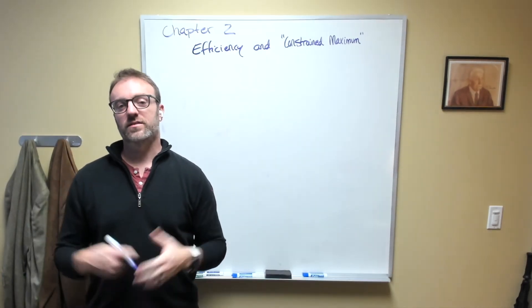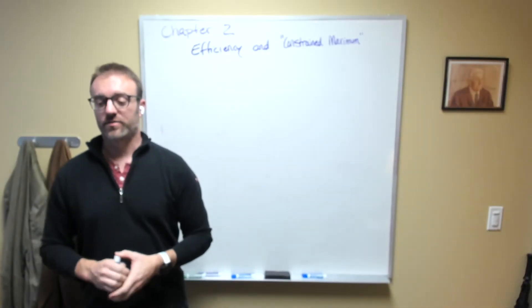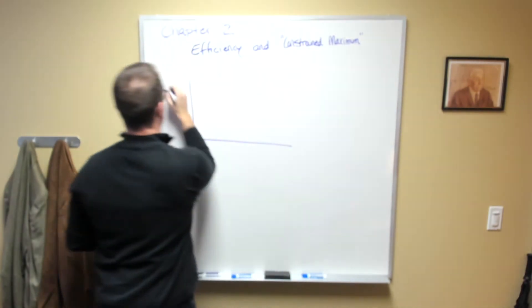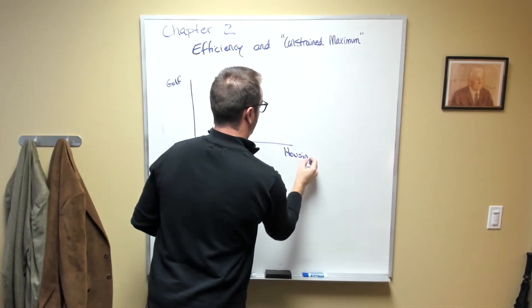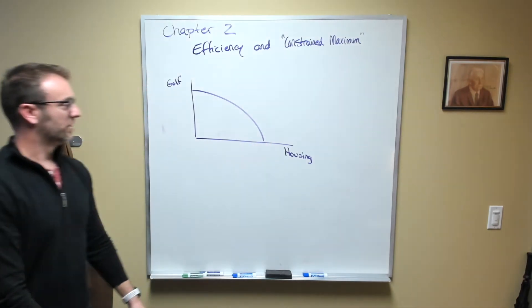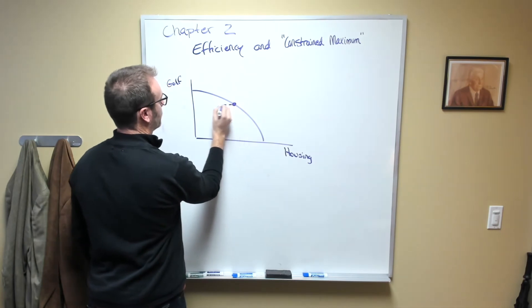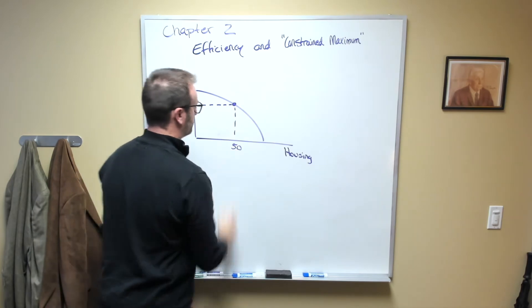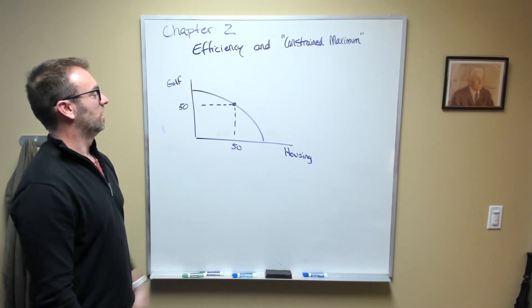For example, you might look at the world and say that there's too much land dedicated to golf courses and not enough land devoted to housing. We can draw that. We'd have golf here and housing here. Again, we have a familiar production possibilities frontier. Let's say we both agree that this is where we are - I'll call it 50 and 50 just for sake of numbers.